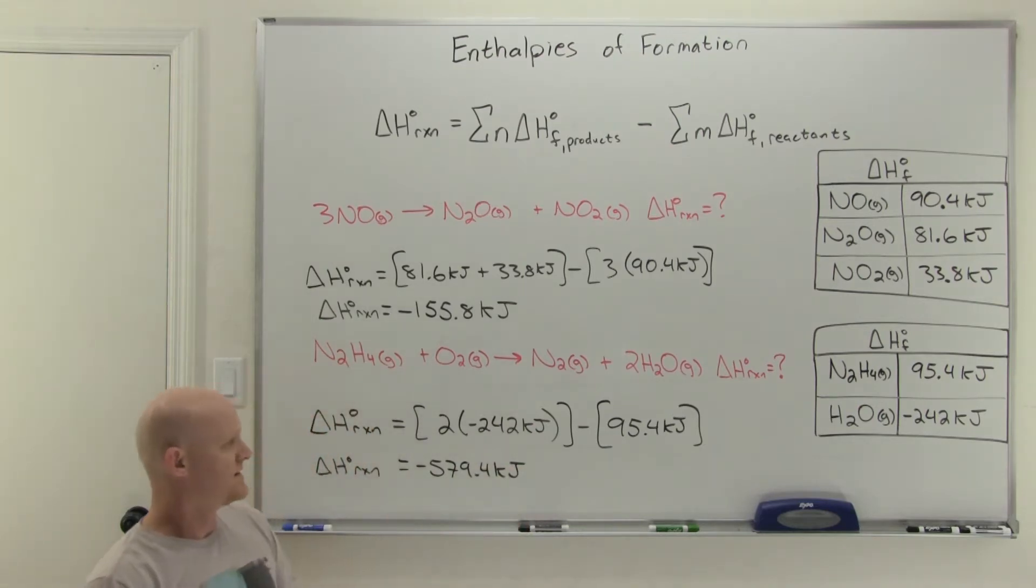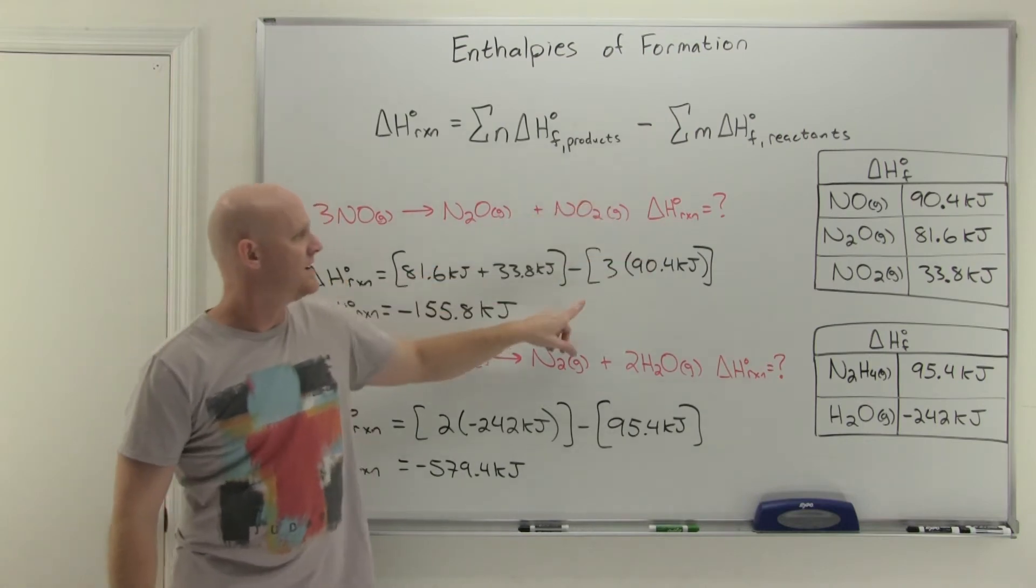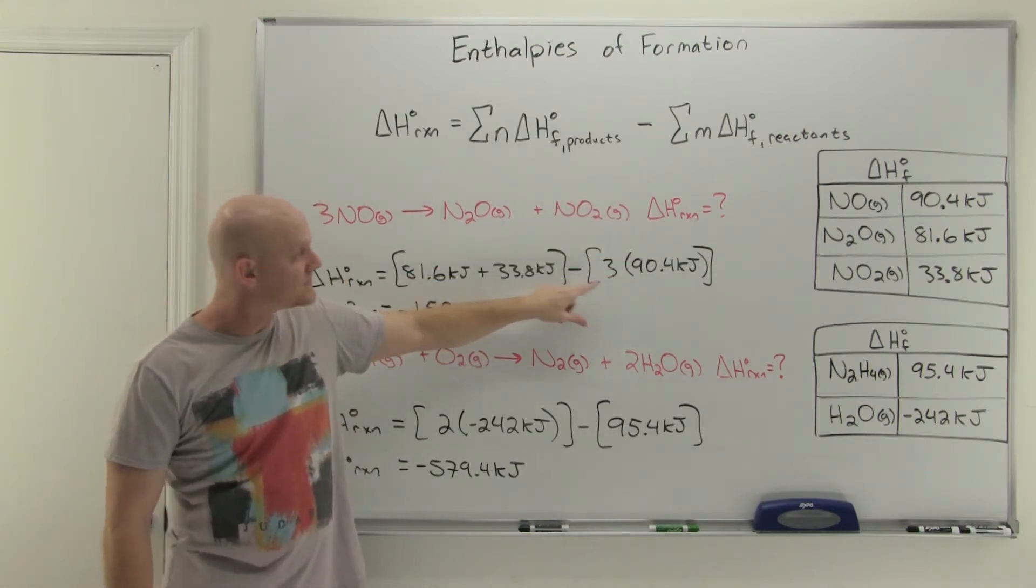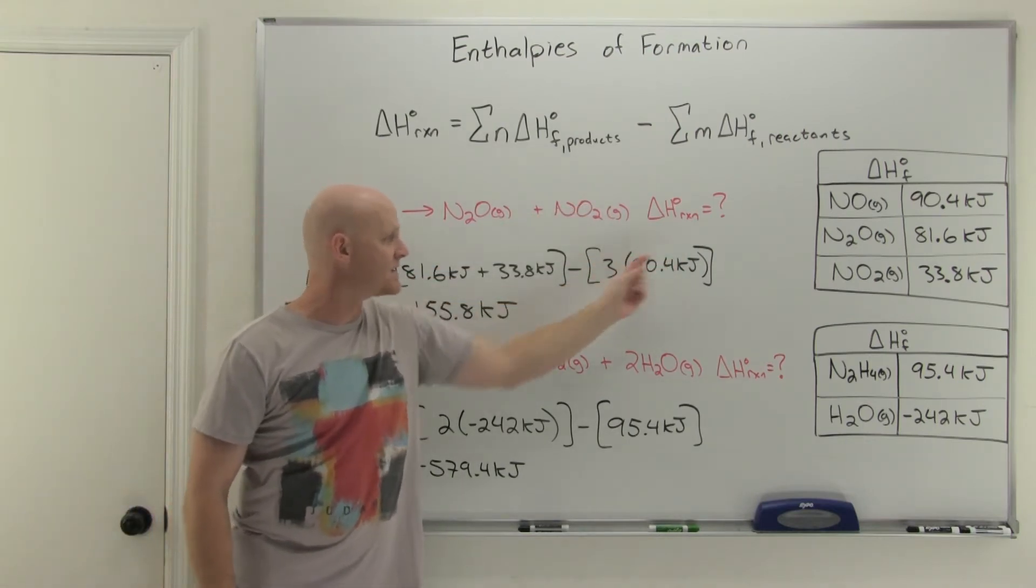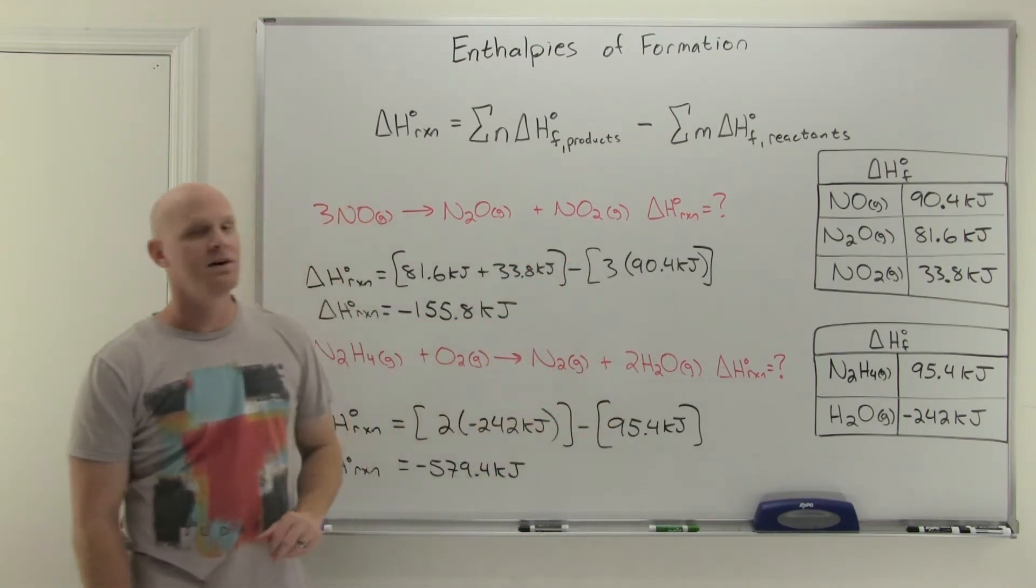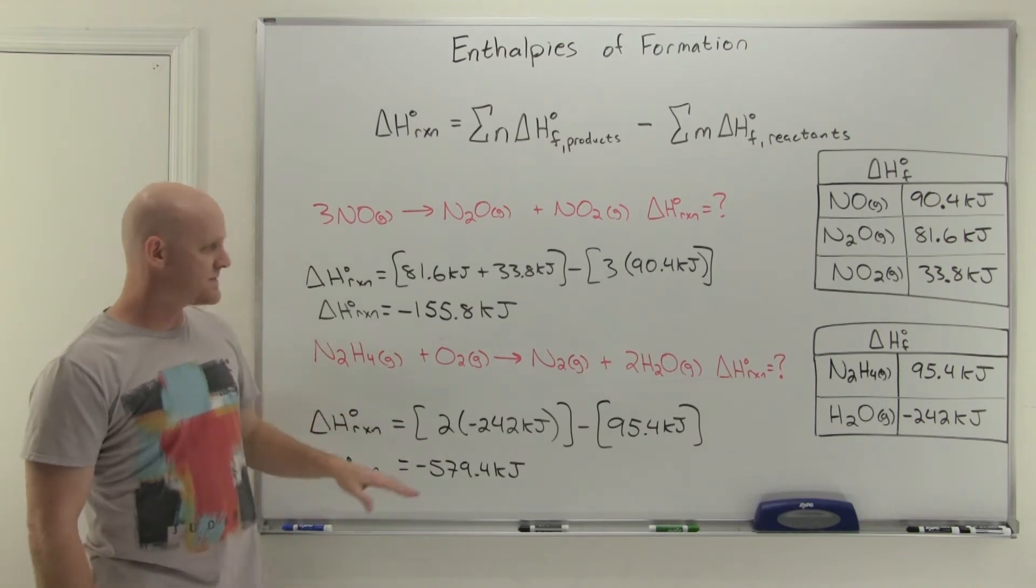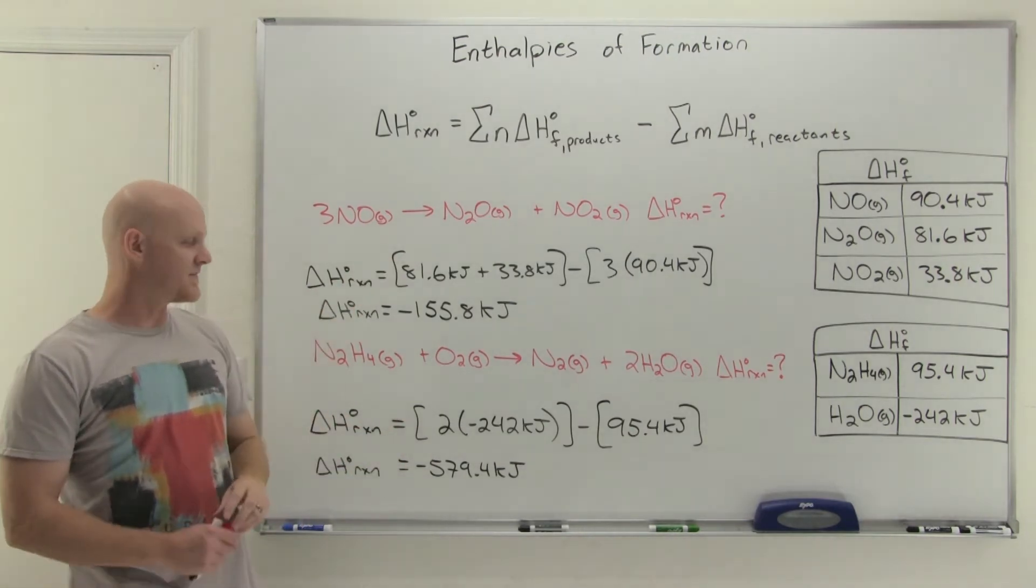One thing to be careful of here, sometimes because you're doing products minus reactants, some students forget to distribute the negative sign through, or at least to sum everything in brackets first before subtracting it. We only really had one term on that reactant side in either case, but just be careful. That is the most common error students make in the calculation using these enthalpies of formation.